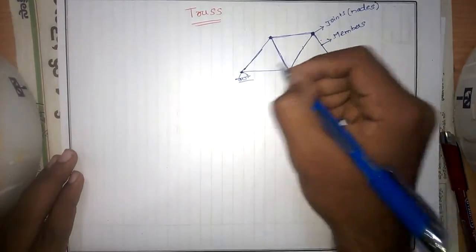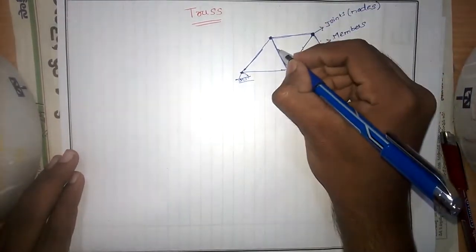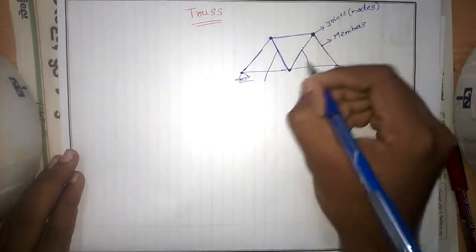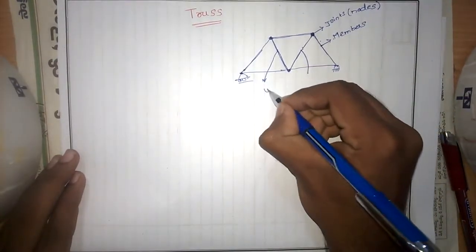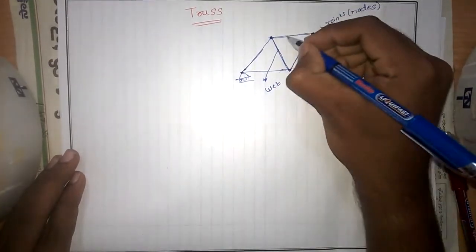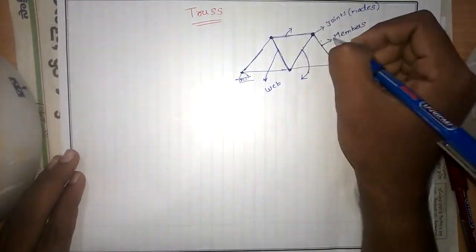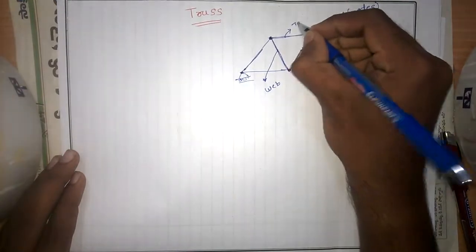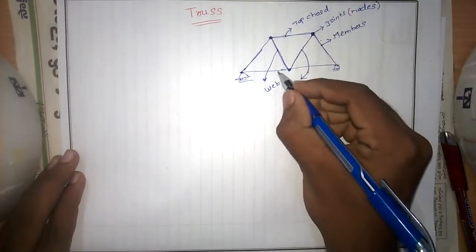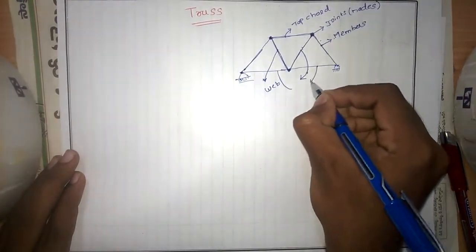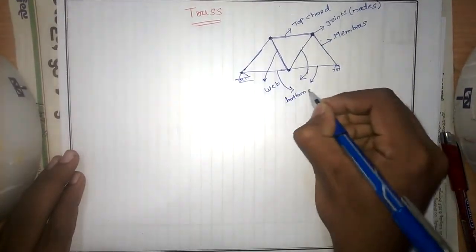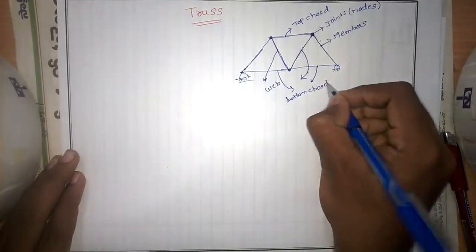The middle members are said to be the web. The outer members form the cord — each top one is called the top cord or top member, and the bottom one is said to be the bottom cord or bottom member.